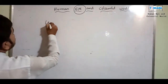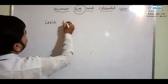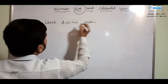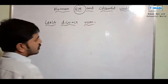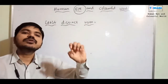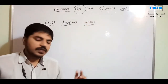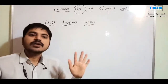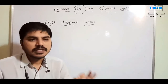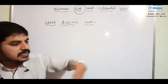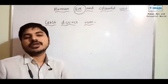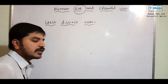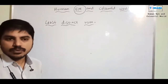The first concept is least distinct vision. Least distinct vision means the minimum distance from the human eye at which we can see an object perfectly clearly — neither too close nor too far.